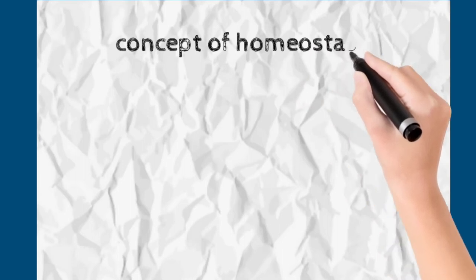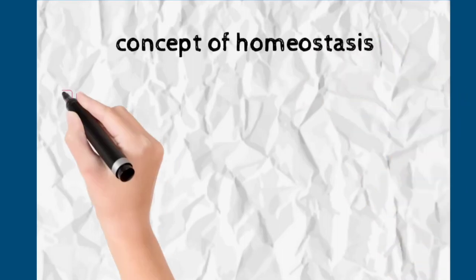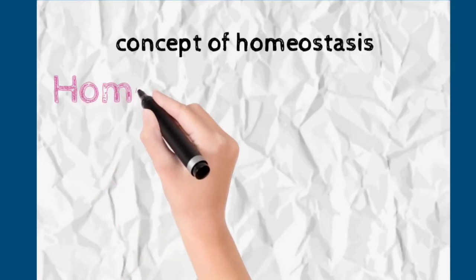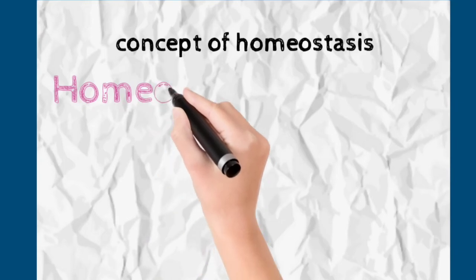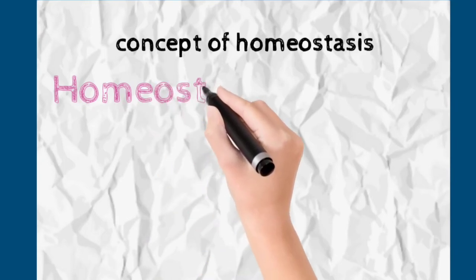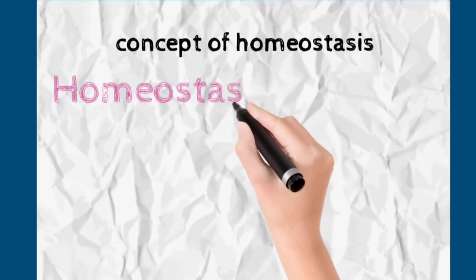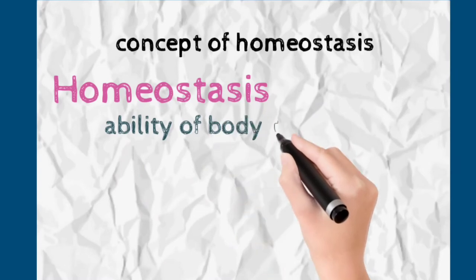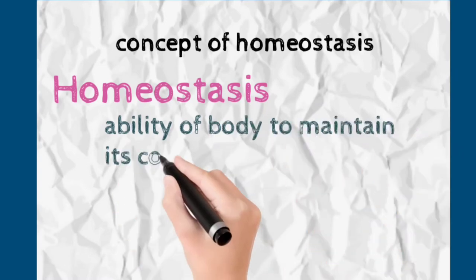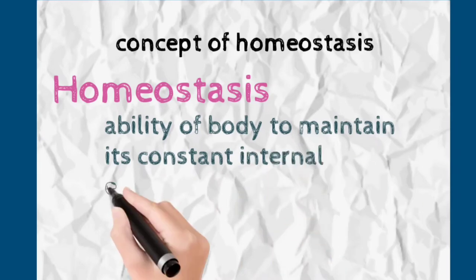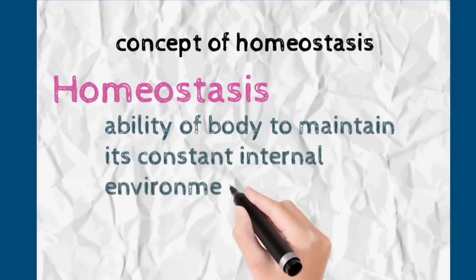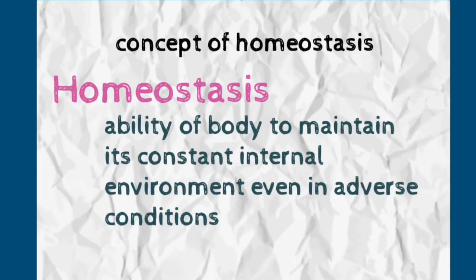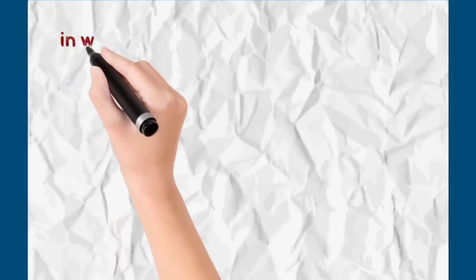हमारी body को optimally perform करने के लिए चाहिए होता है homeostasis — मतलब हमारा body temperature जो अंदर का होता है वो एक particular temperature पे ही रहना चाहिए हमेशा, तभी हमारी body optimal function कर सकती है. And ऐसी और भी कई चीज़ें होती हैं जो stable रहनी चाहिए. The ability of the body to maintain its constant internal environment in any conditions — बाहर का कोई भी condition हो, but हमारी body के अंदर का condition same रहे — that is homeostasis.